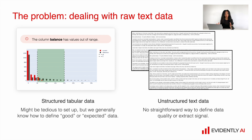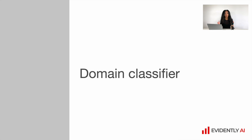But when it comes to unstructured data, particularly raw text, it's quite hard to come up with such rules. So what can we measure based on raw text data? Not a lot of things. I would like to present two very nice strategies which really help to deal with raw text data.